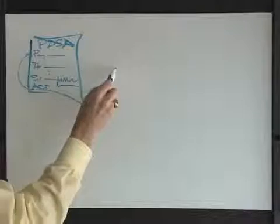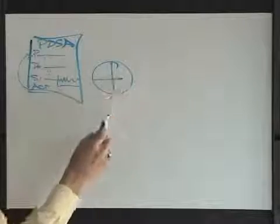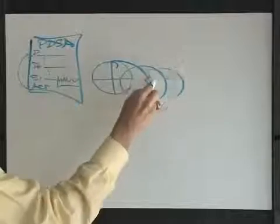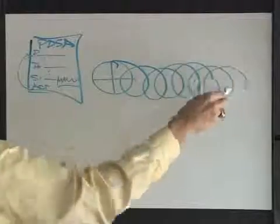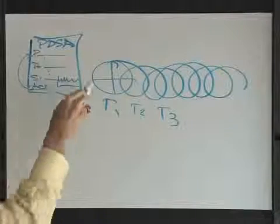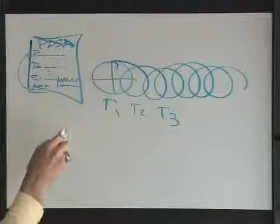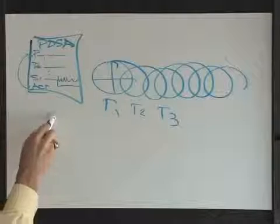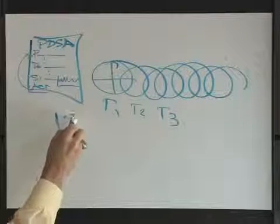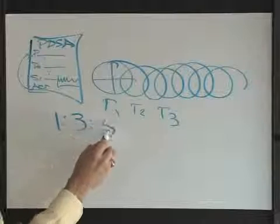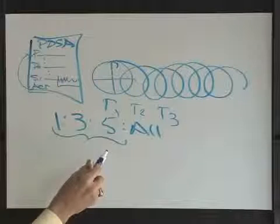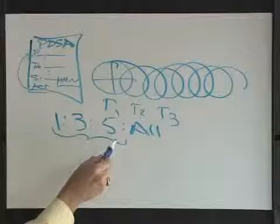PDSA is not a one-time event where you do it once and then go away. What you do is actually do these, you link them sequentially, and they move forward. Test one, test two, test three. And so we're going to link the PDSAs starting out in small tests. You're going to start with one patient on one day, possibly. Then you might move to three patients, then you might move to five patients, and eventually you can apply it to all, but it requires testing under a variety of conditions.